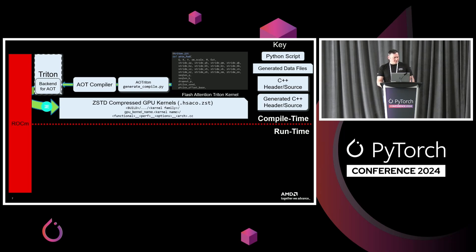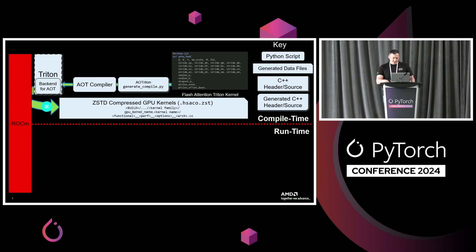The arrow goes through the ROCm box on the left because as part of compilation, we leverage the AMD Clang toolchain to produce HSA code object files — the files representing ISA instructions that get loaded onto the device. We also compress these HSA code object files, which is not something normally done through the ROCm toolchain. We do this extra step because of the sheer number of kernels generated, so that when we bundle them all into a shared object, we take up as little space as possible.